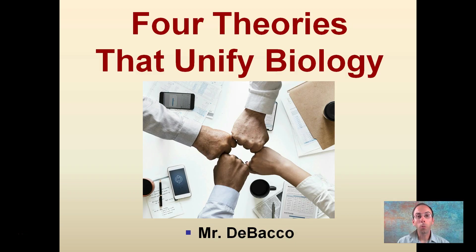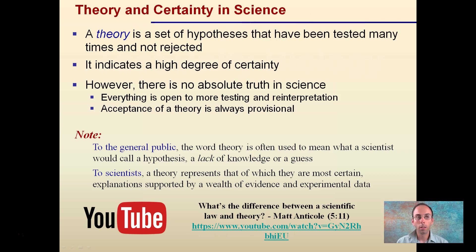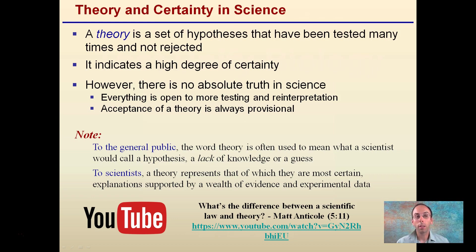As the title implies, we're going to look at the four theories that unify biology. Theory and certainty in relation to science: a theory is a set of hypotheses that have been tested many times and not rejected. This means it indicates a high degree of certainty.